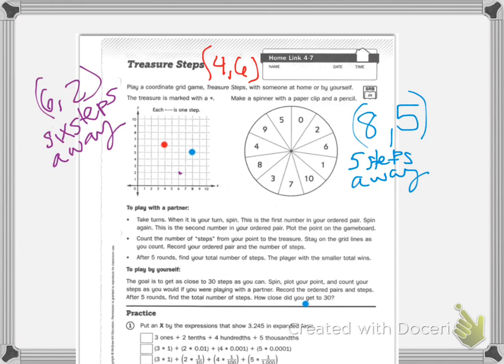Now let's say you don't have anyone to play with at home. And then it says after 5 rounds, your total number of steps. The player with the smaller total wins. So keep going. I did one for you, but you need to actually spin. Now let's say you're playing by yourself.